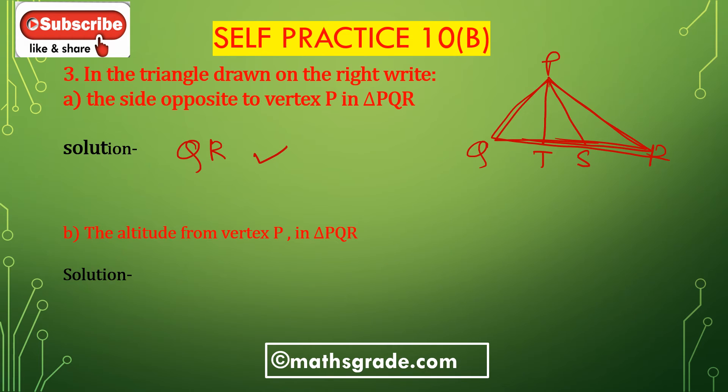Bit B: The altitude from the vertex P in triangle PQR. The altitude from vertex P is PT.